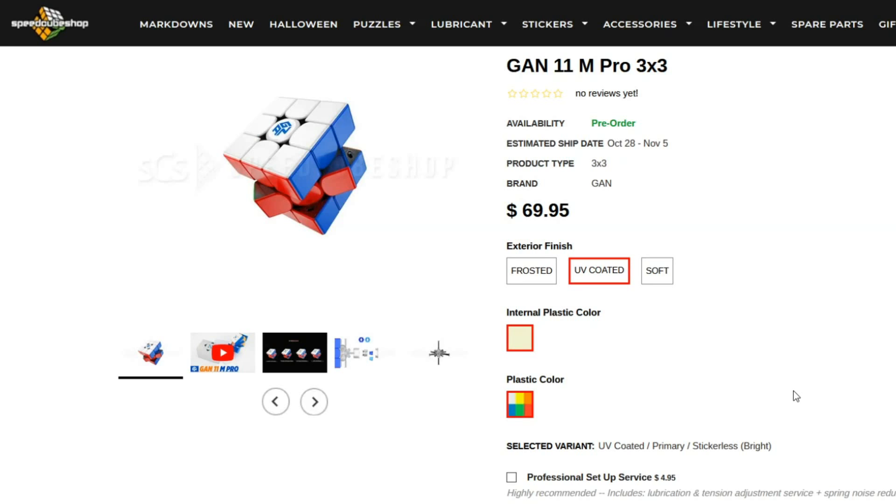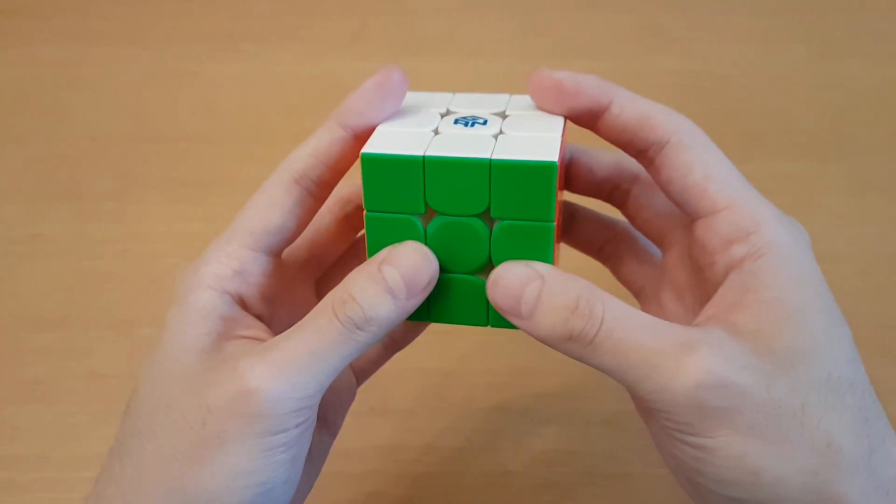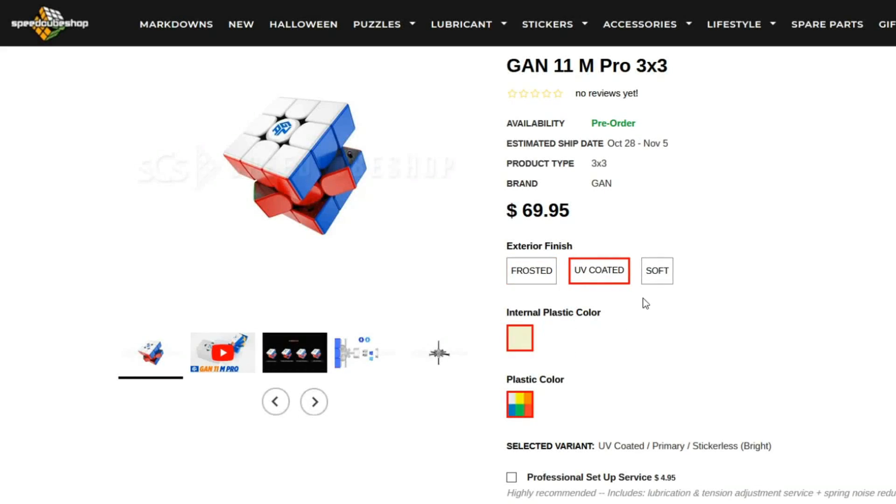But the thing with the options is it's kind of weird. So there's different options for the plastic as well. If you choose frosted plastic, you can get black or primary internals. There's also two more types of plastics, and that's for how the outer surface feels. There's also UV coated and soft, and I don't know what these feel like, as I don't think there have been other cubes that have these.